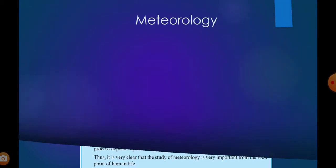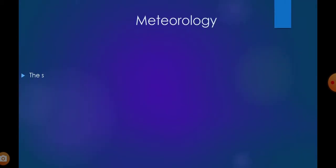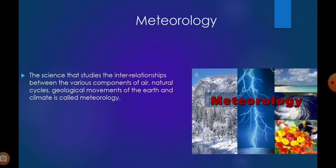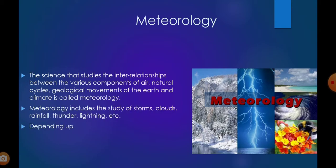Next is Meteorology. The science that studies the interrelationship between the various components of air, natural cycles, geological movements of the earth, and the climate is called Meteorology. Meteorology includes the study of storms, clouds, rainfall, thunder, lightning, and related phenomena.